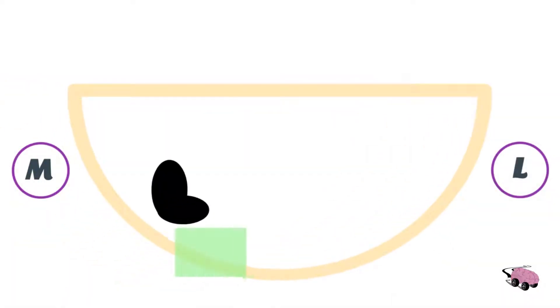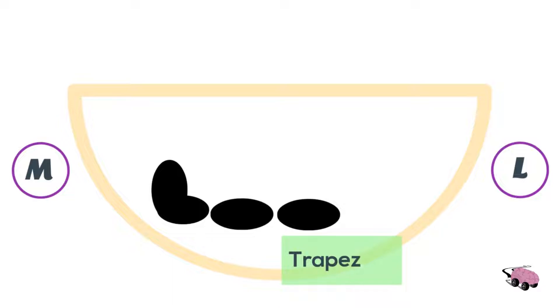The first bone we'll draw is the hamate. Next one is the capitate. Lateral to this, we have the trapezoid. And the last one we'll draw is the trapezium.